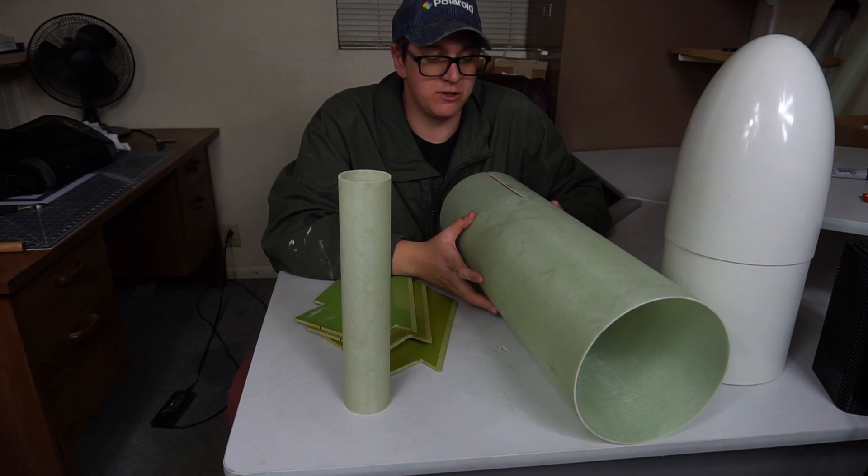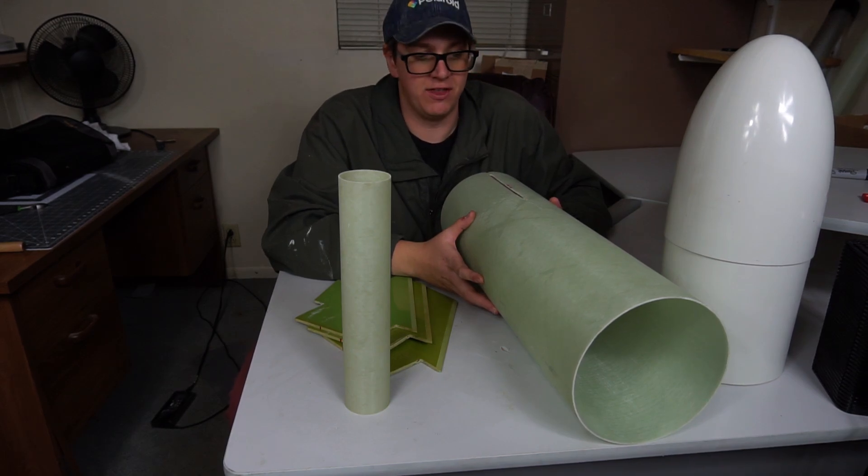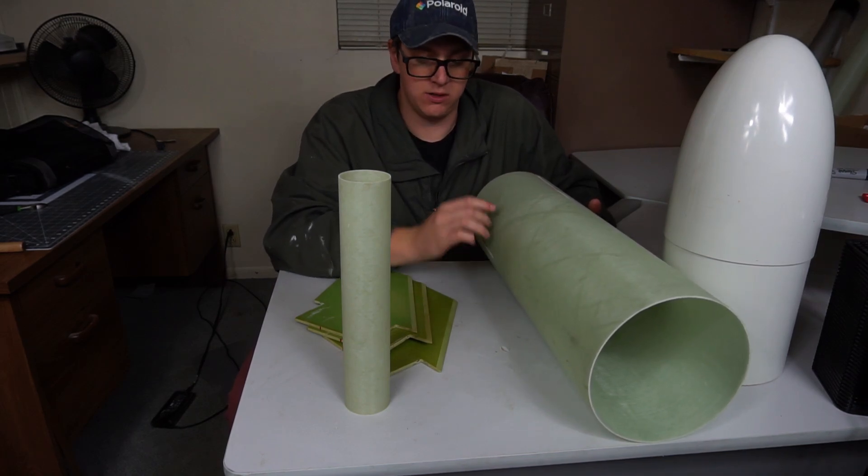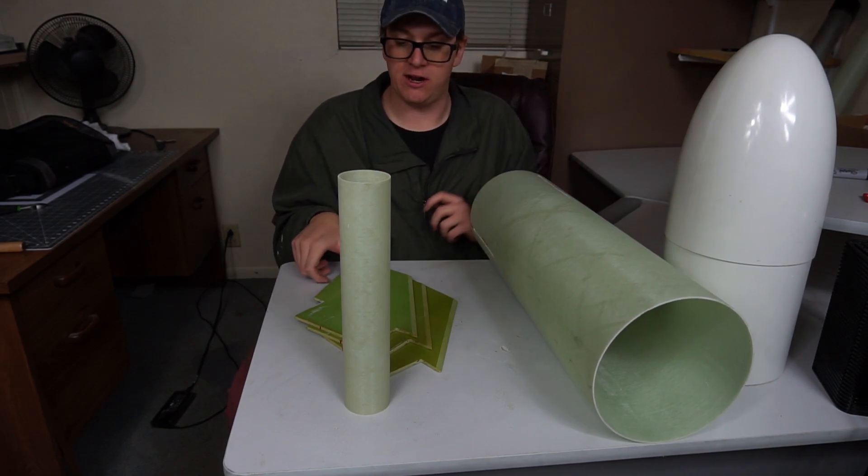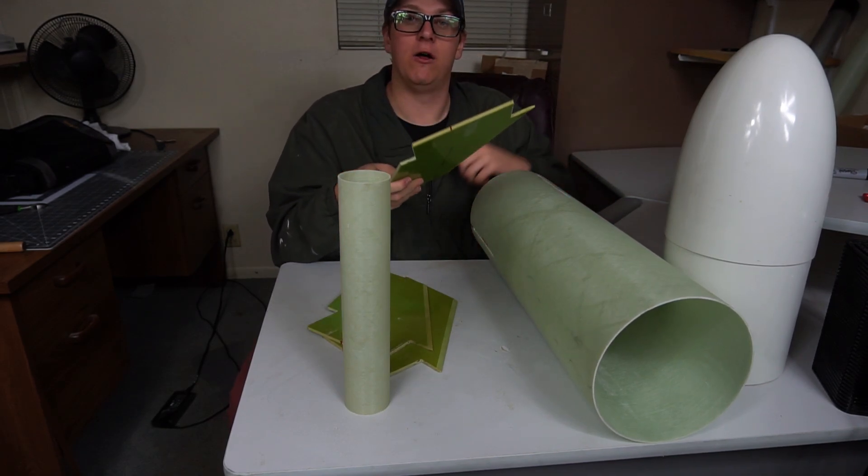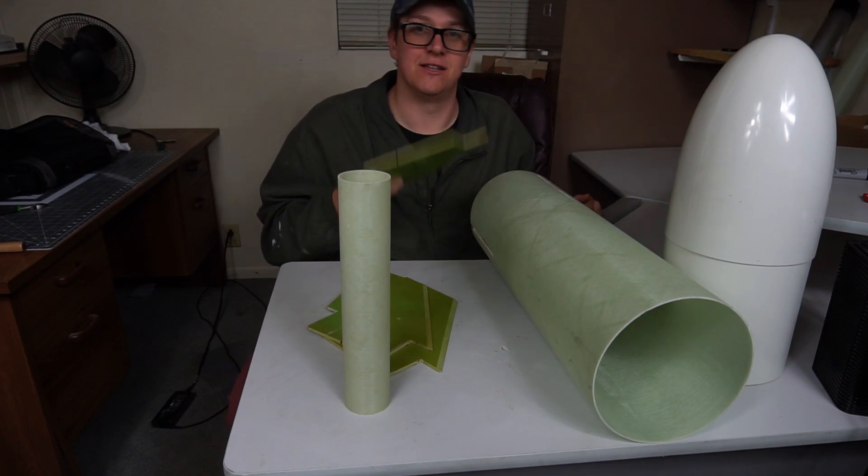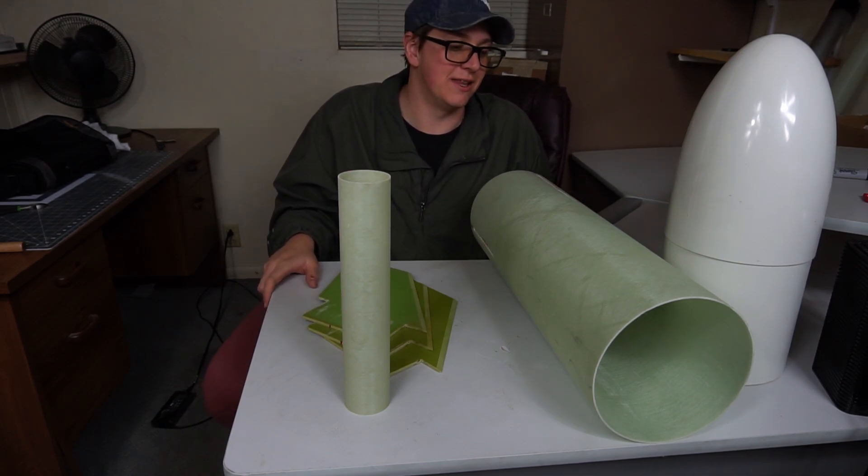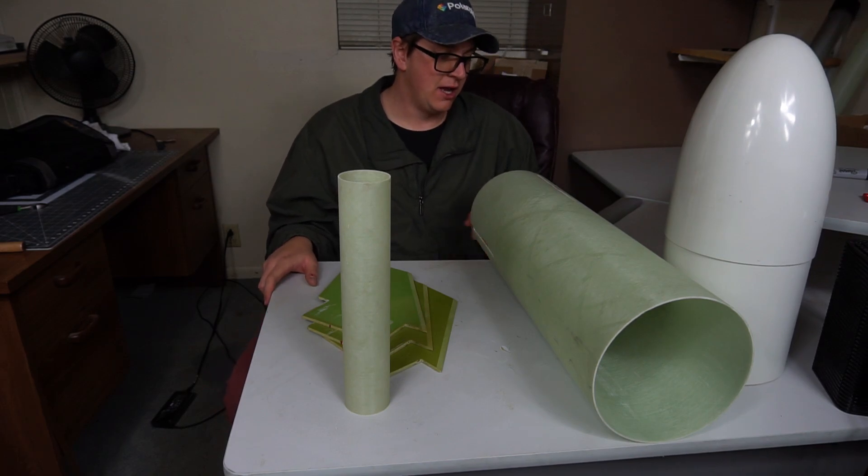We're going to start where we always do with a fiberglass kit which I'm sure you guys are plenty tired of seeing because that is just sanding everything. One interesting thing about this kit though is it comes with wooden centering rings. I also want to give a shout out to the guy I bought it from for marking all the fins and the corresponding slots that they fit in. I'm glad I'm not the only crazy one that goes to that level.